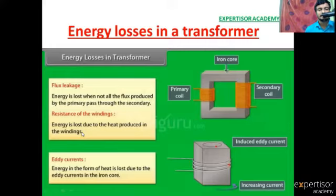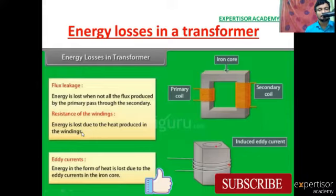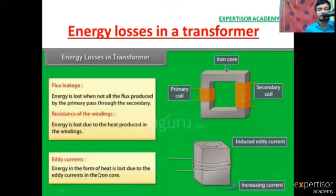If the resistor is in the circuit, energy is lost due to heat produced in the windings. Next, eddy currents. Energy in the form of heat is lost due to the eddy currents in the iron core. Eddy current is a localized current in the circuit.